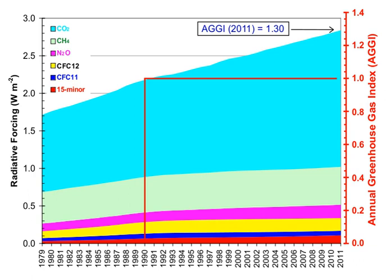One liter of gasoline, when used as a fuel, produces 2.32 kilograms — about 1,300 liters or 1.3 cubic meters — of carbon dioxide, a greenhouse gas. One U.S. gallon produces 19.4 pounds, or 1,291.5 gallons or 172.65 cubic feet of CO2.